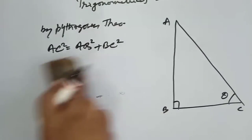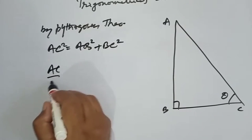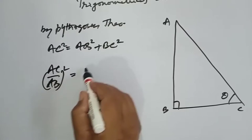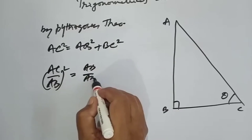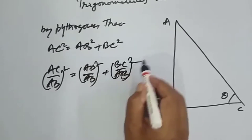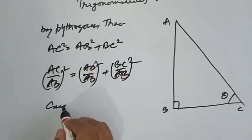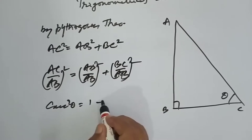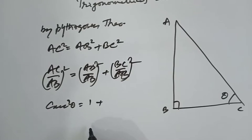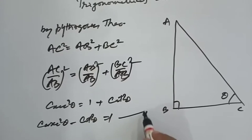Now to prove the second identity, we divide the whole equation by AB square. We get AC upon AB, the whole square, is equal to AB upon AB, the whole square, plus BC upon AB, the whole square. AC upon AB is sec theta, giving sec squared theta is equal to 1 plus tan squared theta. So the second identity is sec squared theta minus tan squared theta is equal to 1.